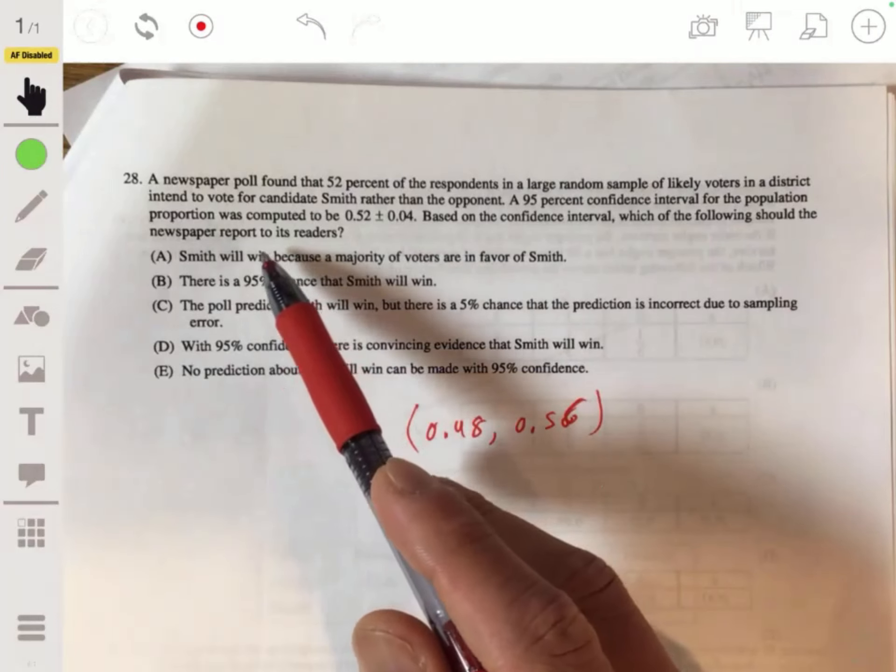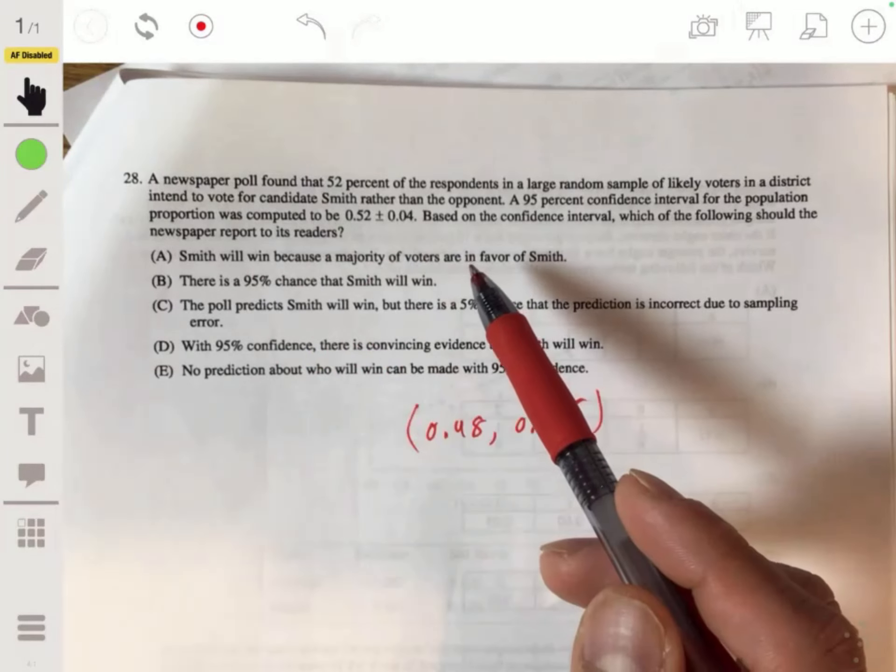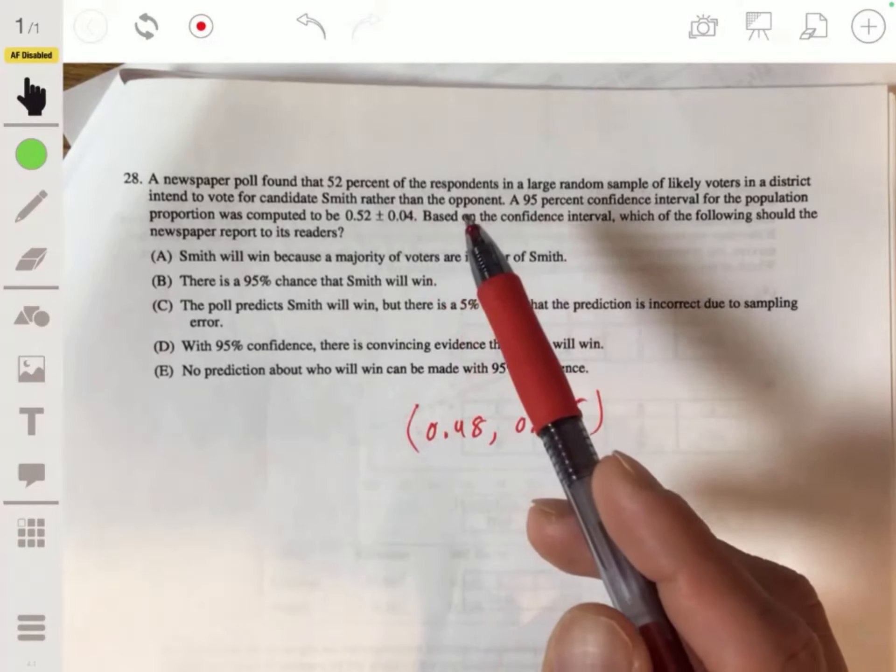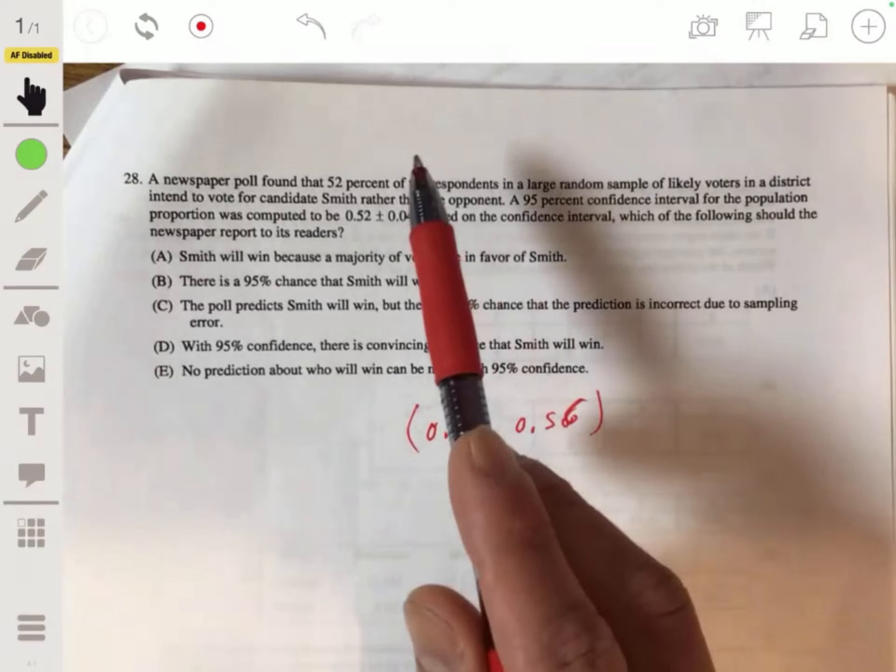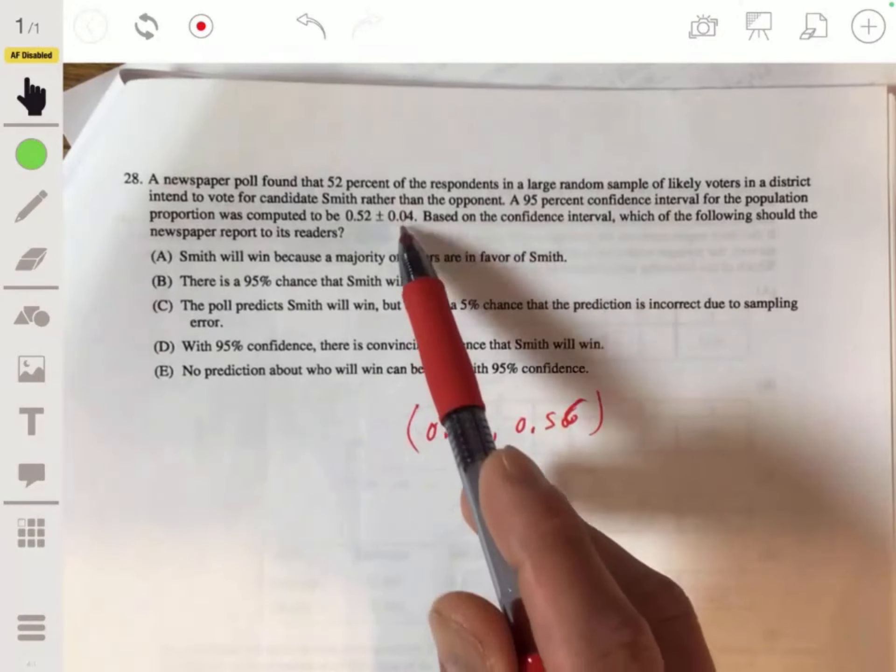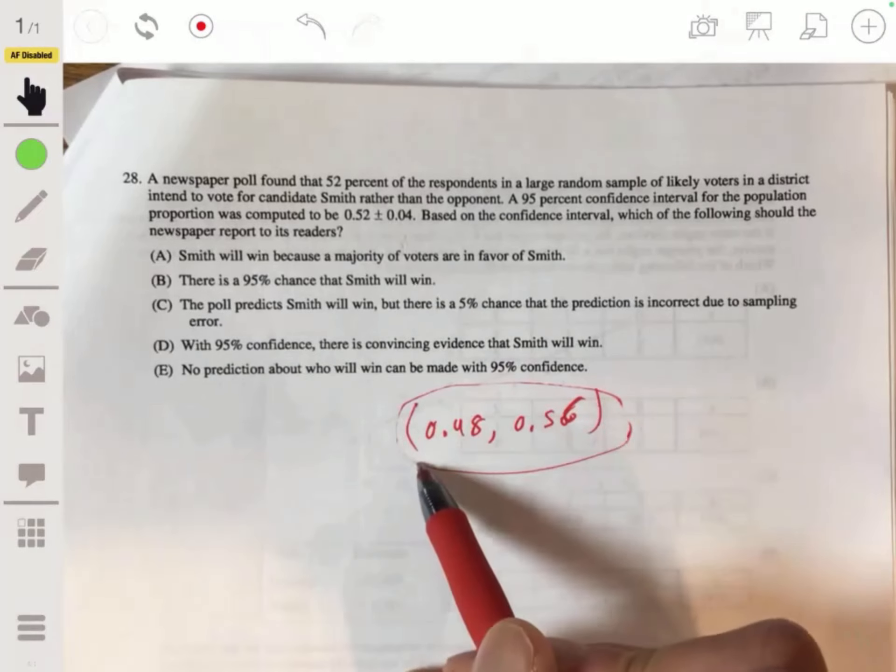Based on the confidence interval, which of the following should the newspaper report to its readers? So 0.52 plus minus 0.04, so we would then have 0.48 to 0.56.